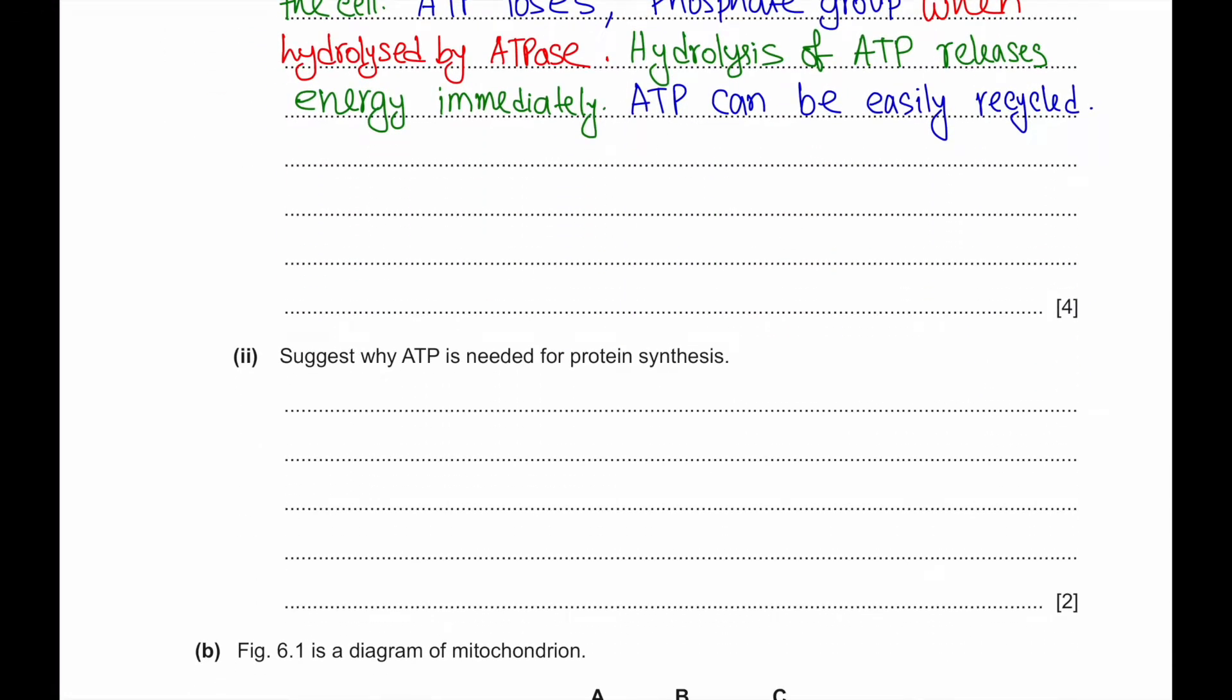Part ii: Suggest why ATP is needed for protein synthesis. ATP is needed for unwinding the DNA when it's in double helix. ATP can also activate the RNA nucleotides which will be used for synthesizing the mRNA. ATP is also needed for peptide bond formation when amino acids are held together, and ATP is needed for moving the mRNA to the ribosome.